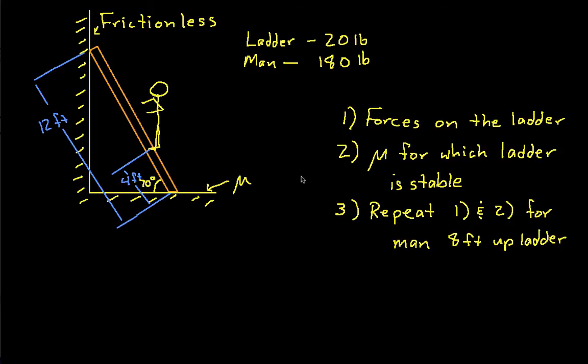The way we'll actually do this to find this value of mu is first we'll do a static equilibrium analysis on the ladder to get the forces. Then from that we can figure out what the minimum value of mu is that would make the analysis we've obtained work. That will be the minimum value of mu for which the ladder is stable. Then we can repeat steps one and two for when the man's up the ladder.